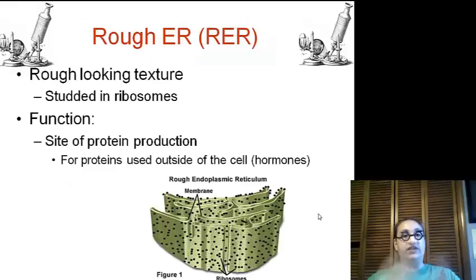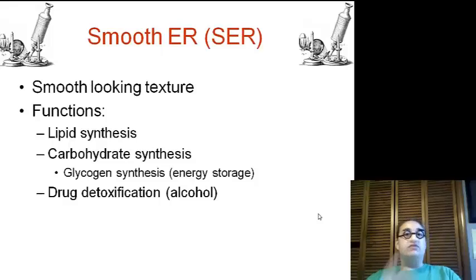Rough ER has a rough texture, studded with ribosomes, site of protein production. It produces proteins that are used outside of the cells, such as hormones. Now, Smooth ER is smooth looking, and its functions are lipid synthesis, carbohydrate synthesis, the creation of glycogen, which is going to be where we store our energy, and drug detox for the cells.